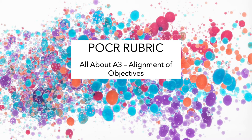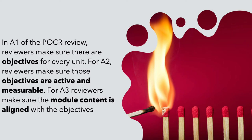Item A3 in the rubric has to do with alignment of objectives. In A1, reviewers make sure there are objectives for every unit. For A2, reviewers make sure those objectives are active and measurable. And for A3, reviewers make sure that the module content is aligned with all the objectives.